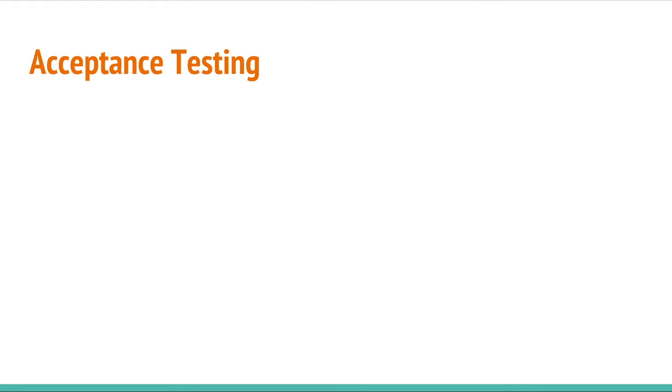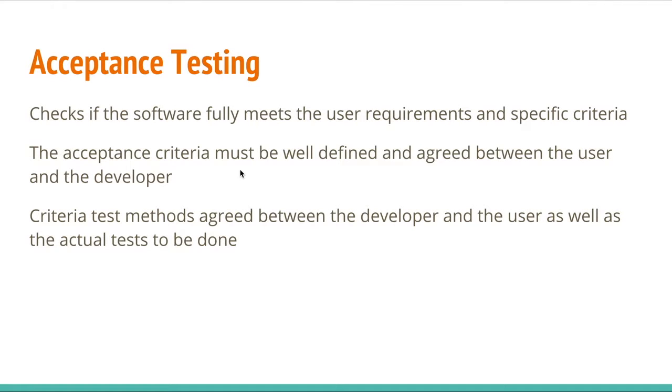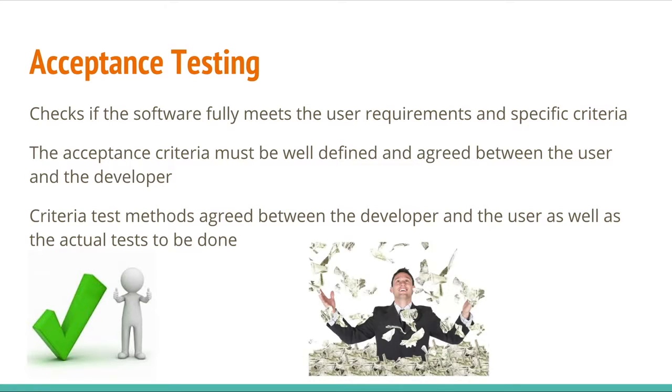Now, acceptance testing. Acceptance testing is checking if the software fully meets the user requirements and specific criteria. And the specific criteria must be well defined, and it's a criteria that is agreed between the user and developer at the beginning of the software development lifecycle. And the criteria test methods are also agreed between the developer and the user, as well as the actual test to be done. And if the user agrees and says that the program is fine, he accepts it, then the developer can get paid.